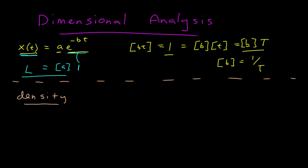My next example: what is the dimension of density? Density, if we call this rho, if the density is constant, we know that it is equal to the mass divided by the volume. The mass has dimensions of mass, and volume has dimensions of length cubed.